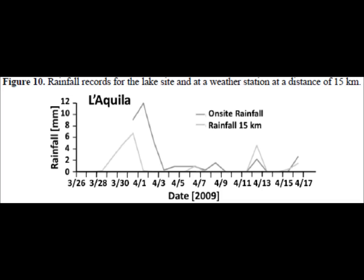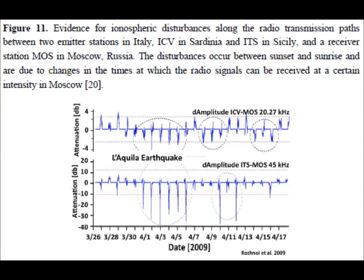Figure 10 is a follow-up to the last figure and demonstrates that rainfall was not the reason for the toad departure away from the pond. Figure 11 shows evidence for ionospheric disturbances along radio transmission paths over a time frame in Italy when an earthquake occurred.